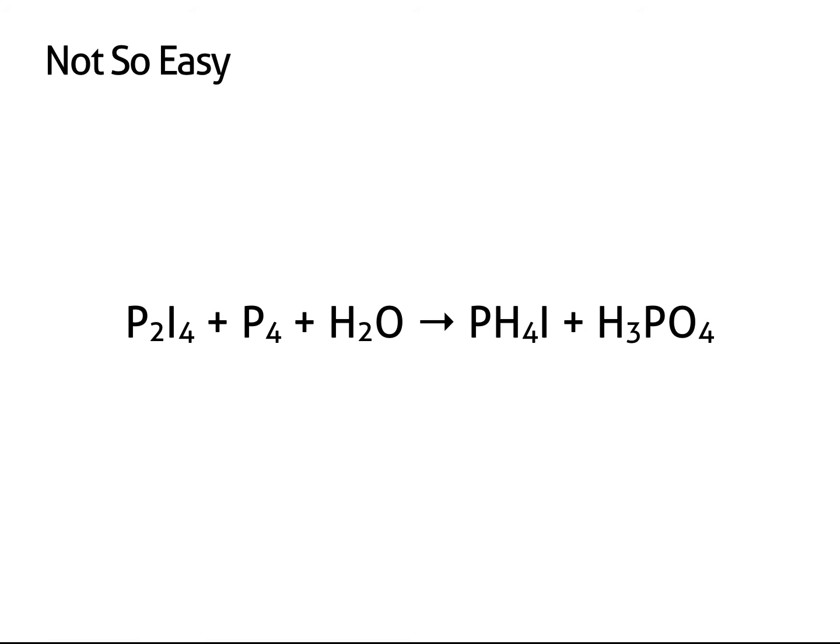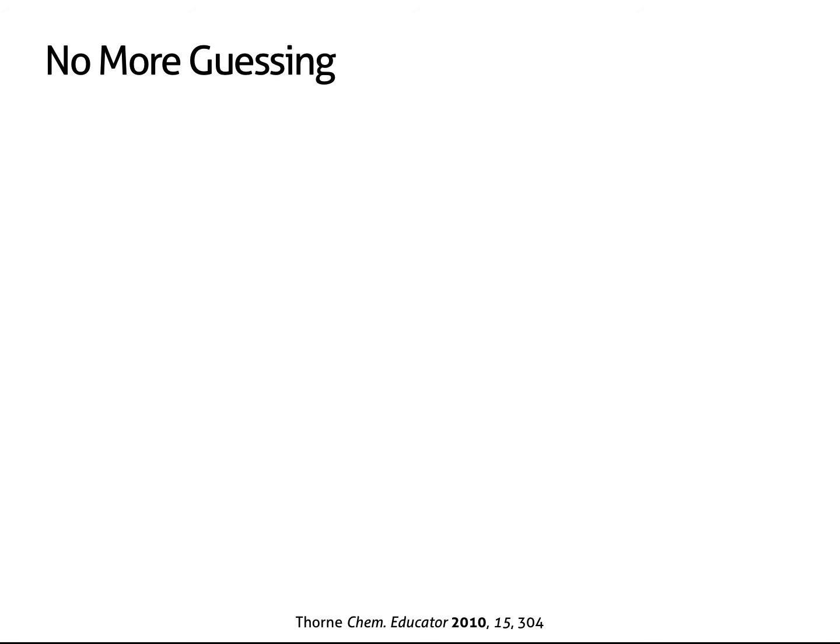Here's an example of an equation that would be extremely difficult to balance by inspection. Go ahead and try it yourself. Unless you're very lucky or already know the answer, it could take a few hours. The trial and error method of balancing chemical equations taught in most classes simply doesn't work for many of the reactions you'll come across. We need something that works every time without guesswork or exceptions.